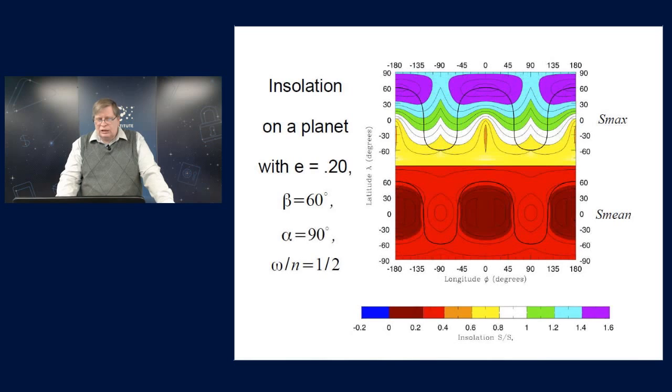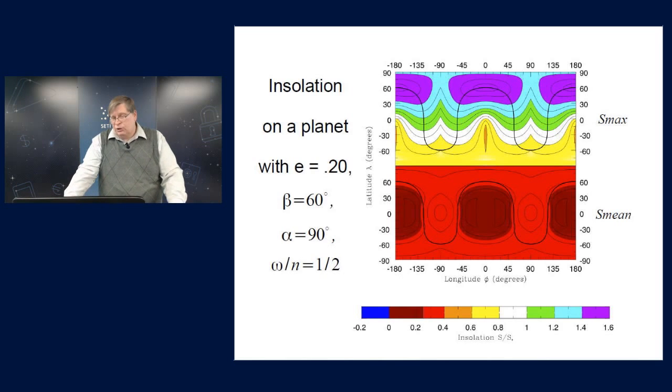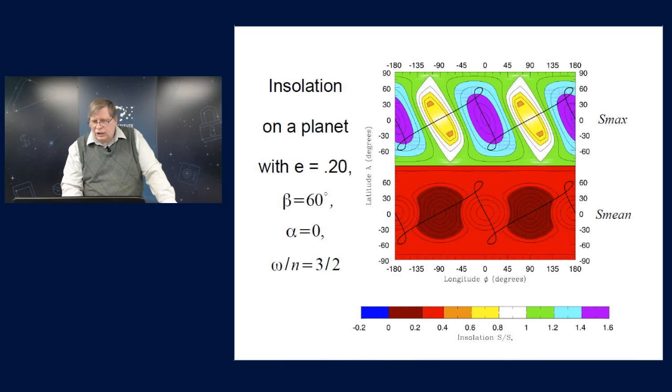Now let's go back to the resonance that we know well. The three-halves resonance like Mercury is in. Of course, Mercury has practically no obliquity. This is a case where, what would it be like if it had a 60-degree obliquity. Now, the ground track is going around from east to west again and the pattern of insolation is repeating twice just like the ground track. And we'll step through this one 45 degrees.